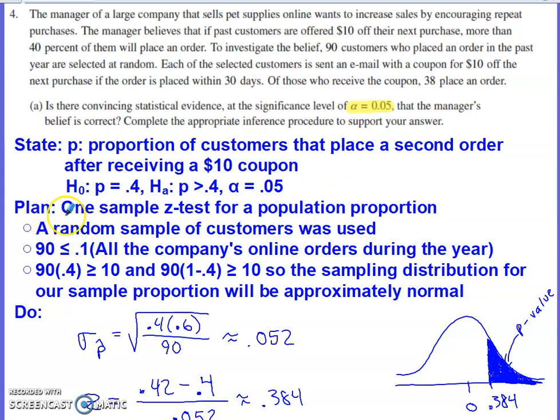There is only one sample here - 90 customers who placed an order within the past year. We're dealing with a proportion: the proportion of customers that would place another order. Proportions always deal with z-scores rather than t-scores, and we are trying to make a judgment about a population proportion.